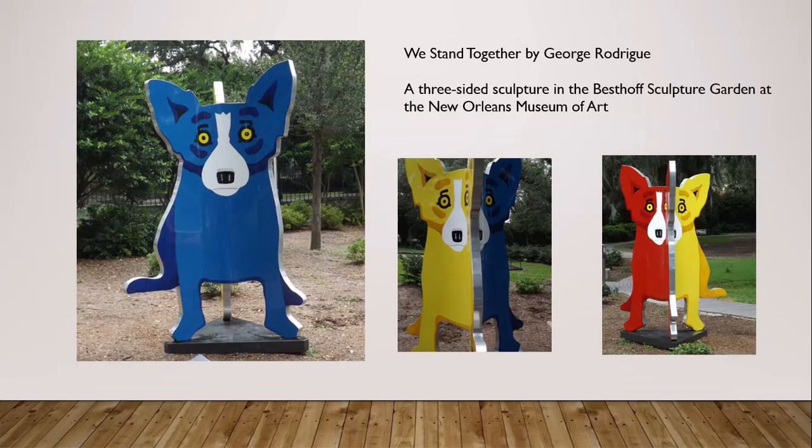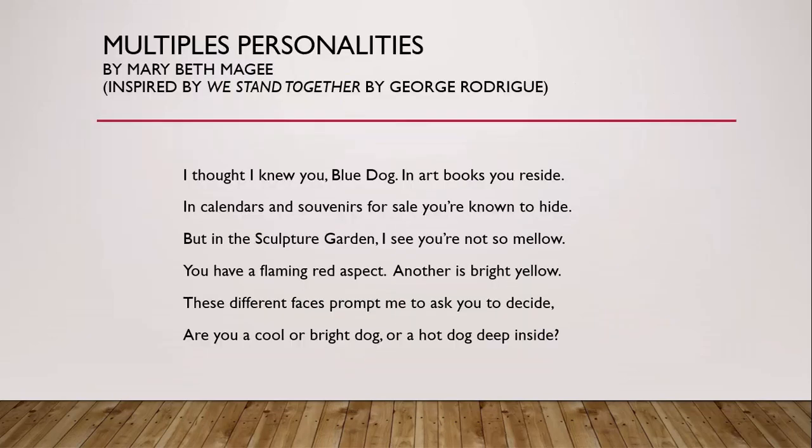Take a look at an example of how a visual medium can inspire an ekphrastic verse. Many people are familiar with the blue dog art by George Rodrigue, but in the Besthoff Sculpture Garden at the New Orleans Museum of Art, there's a three-sided sculpture based on the blue dog — one is yellow, one is red, keeping their blue dog company. As I looked at these, it inspired me to wonder about the multiple personalities of the blue dog.